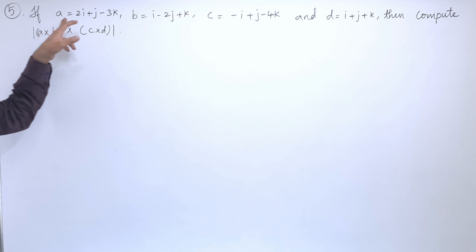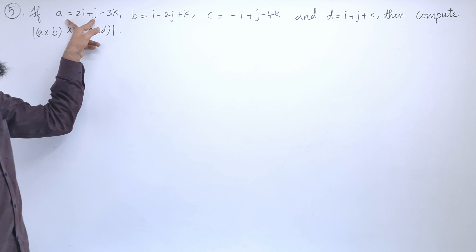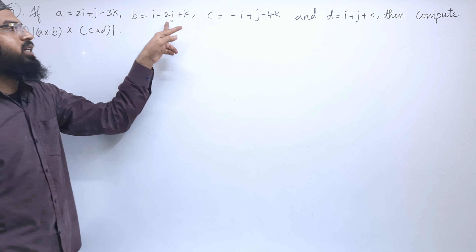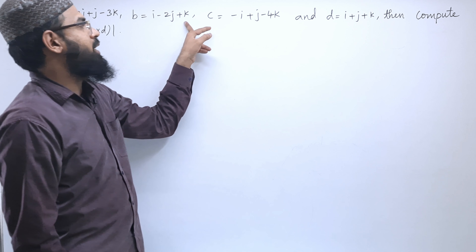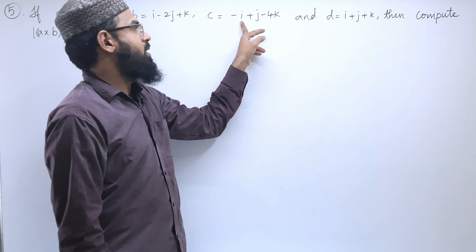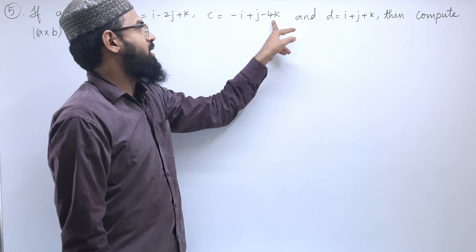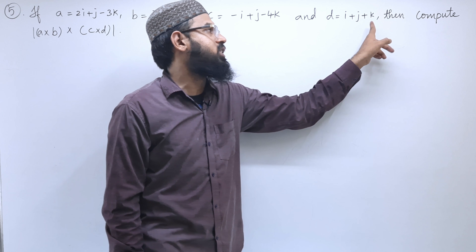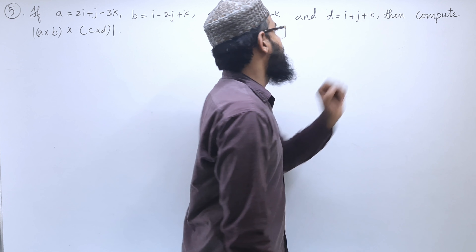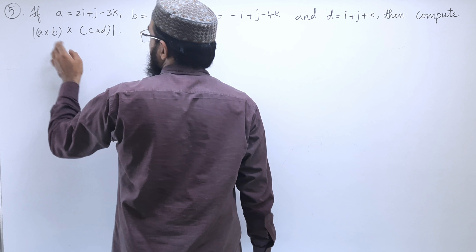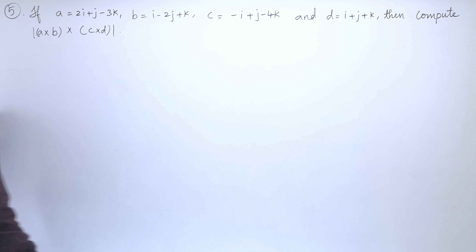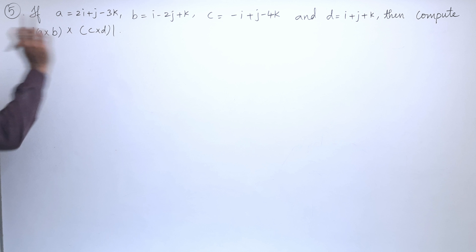5th problem. If A equals 2i + j − 3k, B equals i − 2j + k, C equals −i + j − 4k, and D equals i + j + k, then compute the magnitude of (A cross B) cross (C cross D).